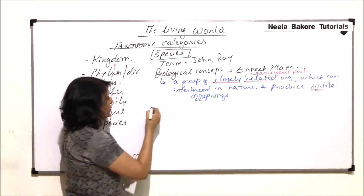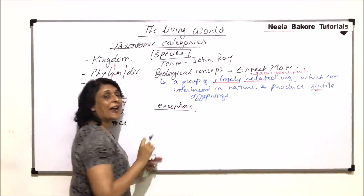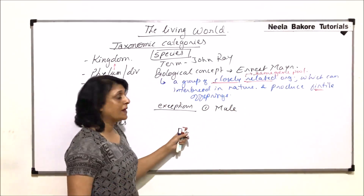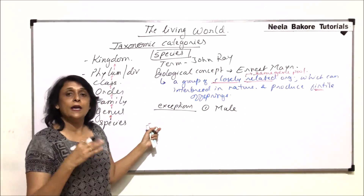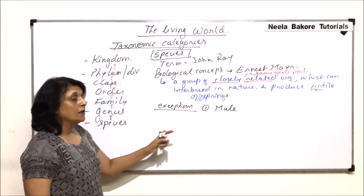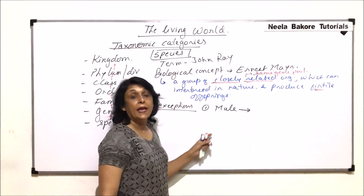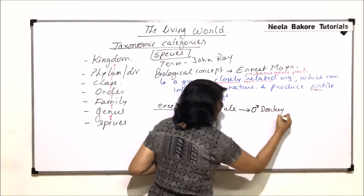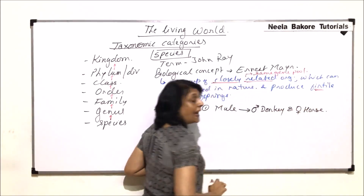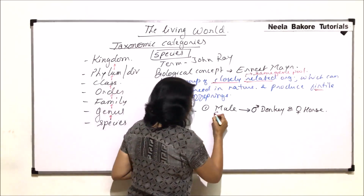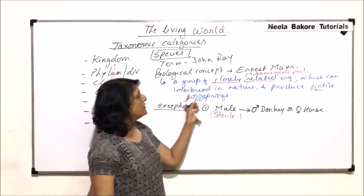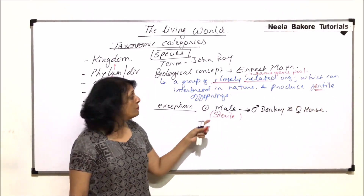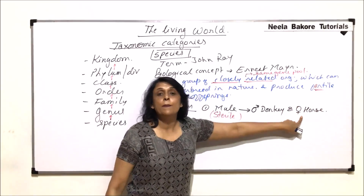Now, coming to some exceptions. There are two categories we normally talk of. The first is mule. These hybrids are found in the case of donkeys and horses — these are inter-species hybrids. Mule is a hybrid obtained when reproduction takes place between a male donkey and a female horse. This hybrid is sterile. So in our definition, when we say that the offspring should be fertile, here is an exception — a hybrid is produced, but they are sterile, and it is between members of different species.